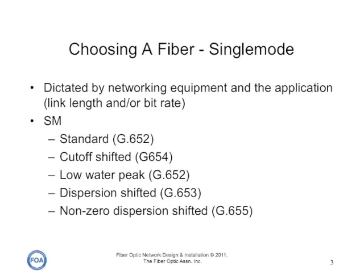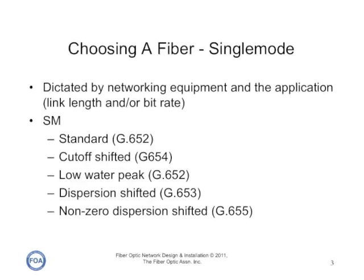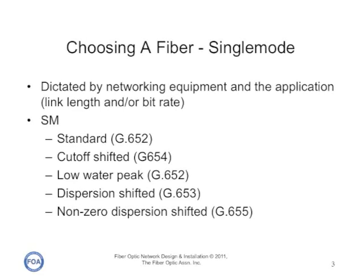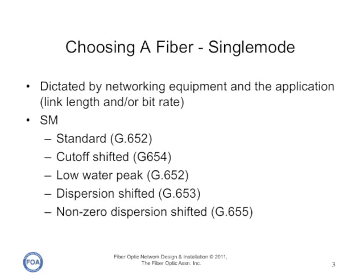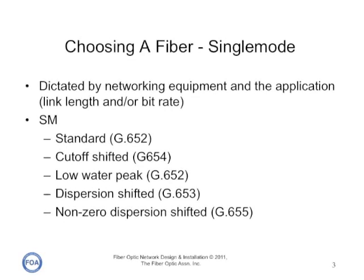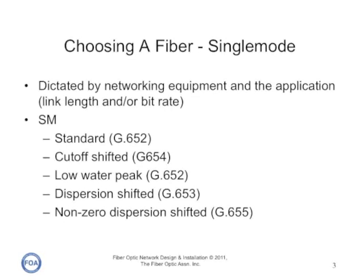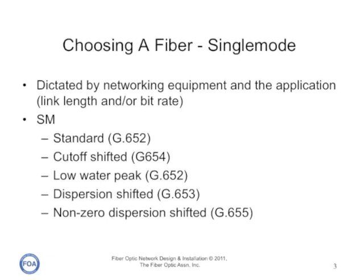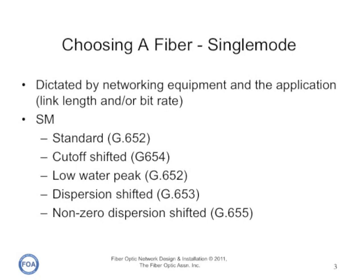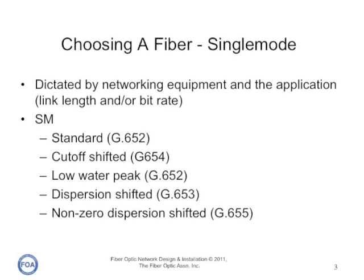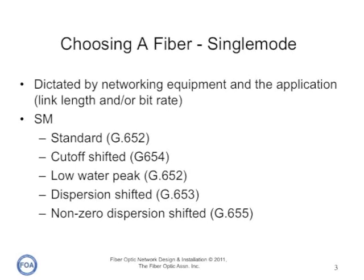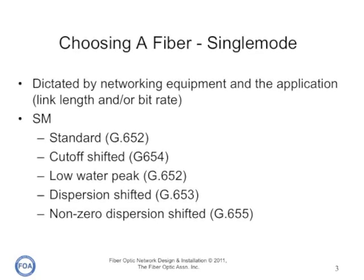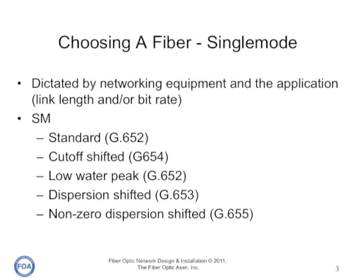While we often think of fibers as either single mode or multi-mode, there's a lot more choice than that. For example, in single mode fiber, typical for outside plant, you can use standard single mode fiber, which you'd use in a metropolitan network, unless you wanted to do coarse wavelength division multiplexing, and you'd use a low water peak fiber. Longer lengths would use cutoff shifted fiber or dispersion shifted fiber, especially if you're going to be dealing with dense wavelength division multiplexing.